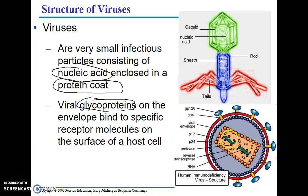If we look at this picture, inside the green is the genetic material — in this case it's RNA — the red is the protein coat, and the yellow and blue things are the glycoproteins. The glycoproteins help viruses get into your cells or infect cells. That's the purpose of the glycoproteins: they help viruses get into your cells by binding to receptor molecules on your cells.